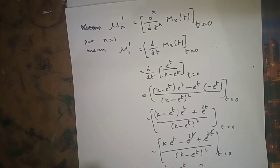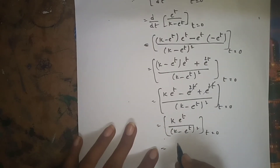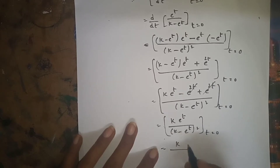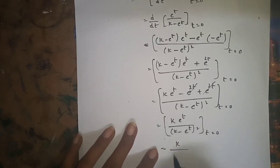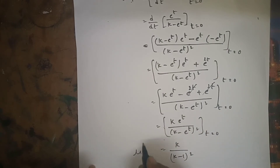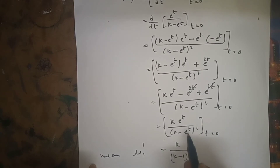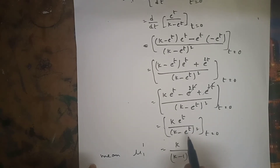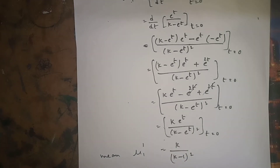Substituting t = 0: e^0 = 1, so we get k*1 / (k - 1)^2 = k / (k-1)^2. Therefore, the mean mu_1' = k / (k - 1)^2.